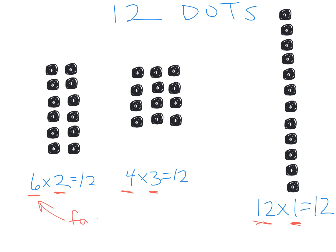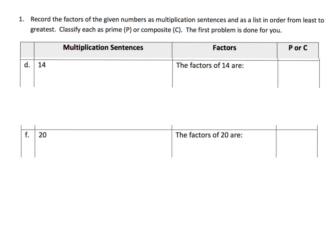So the factors of twelve are six, two, four, three, twelve, and one. These are the factors of twelve, and twelve is the product. These are two important words we want students to recognize: factors and products.